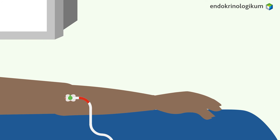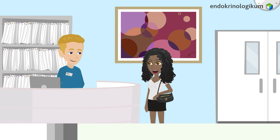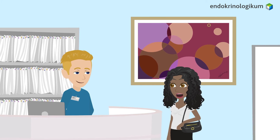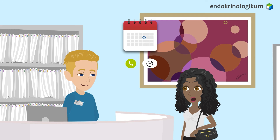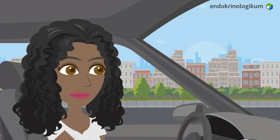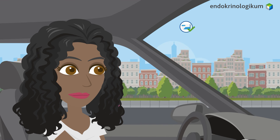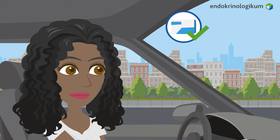After 4 hours, another blood sample will be taken from the venous catheter. Subsequently, the catheter will be removed, and the test will be concluded. Please schedule a follow-up phone or in-person appointment at the reception desk to discuss the test results. Your ability to drive is not impaired after the test. You can now resume taking your medications, as discussed with your treating physician.